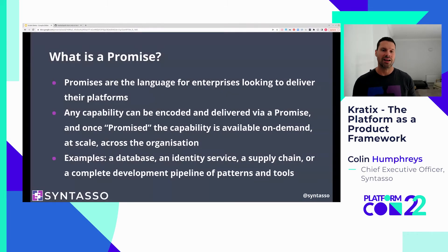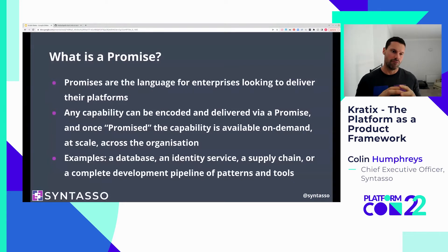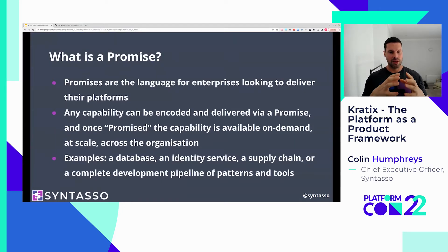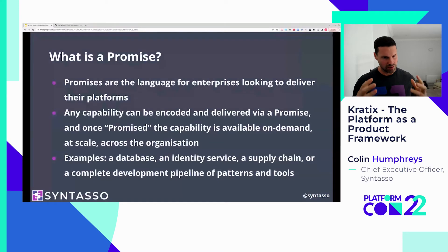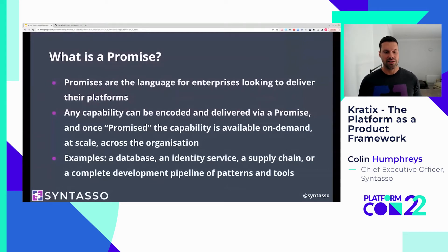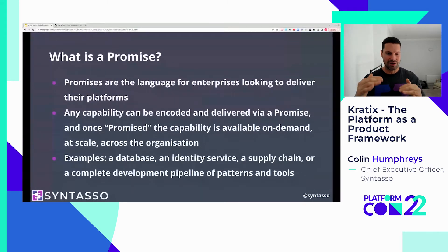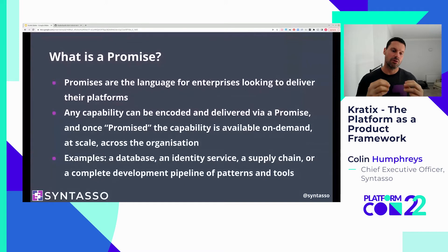A promise enables an enterprise to encode a capability offered by the platform to the application teams. Once something has been wrapped as a promise, it's installed into Kratix and available on demand as a service across the organization. Examples include databases, web servers, and identity services. Teams can then use those lower-level promises with higher-level promises to compose things like supply chains and development pipelines — all manner of higher-level abstractions, using promises to compose your platform as a product.